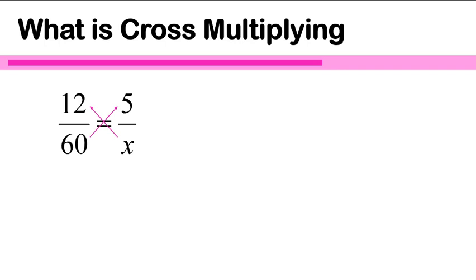So I'm going to multiply 12 times x and 60 times 5. The x and the 12 were across from each other, so I'm multiplying them. The 60 and the 5 were across from each other, so I'm multiplying them. It doesn't matter what order I write them in — it could be x times 12 or 5 times 60. The order does not matter, and it doesn't matter which side of the equal sign you put them on. The important thing is that the numbers opposite each other are being multiplied.